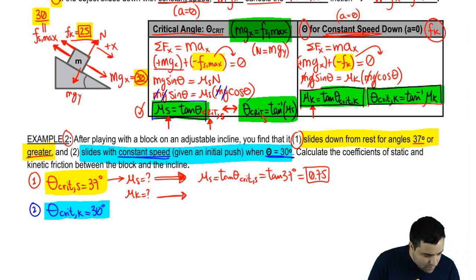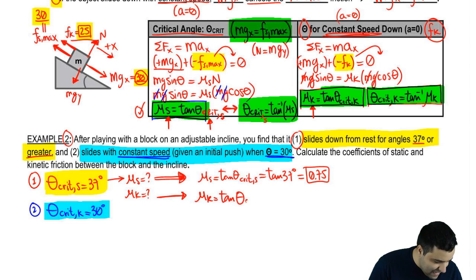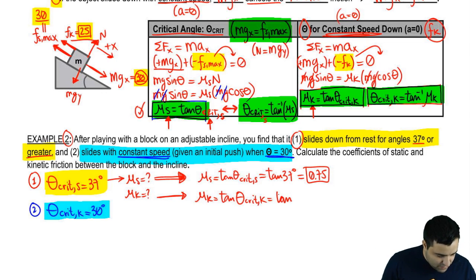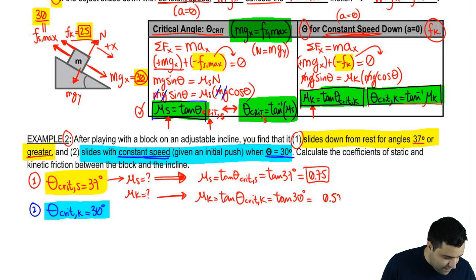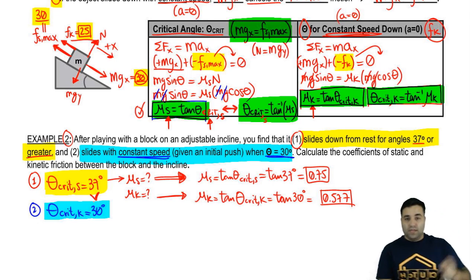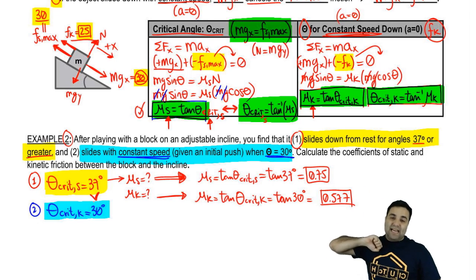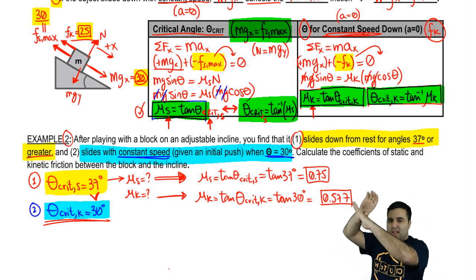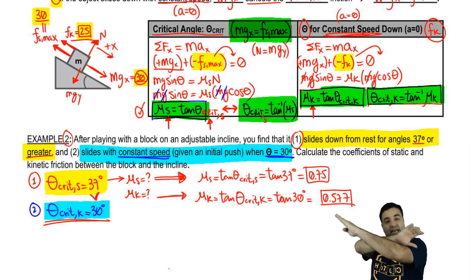The tangent of 37 is 0.75. Similarly, mu-kinetic equals the tangent of the kinetic critical angle — the tangent of 30 degrees — which gives 0.577. Notice that the static critical angle of 37 is greater than the kinetic critical angle of 30.